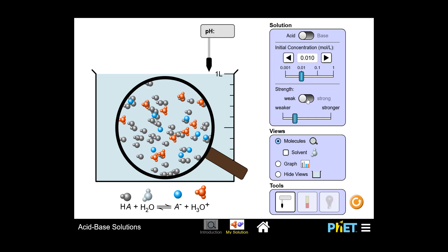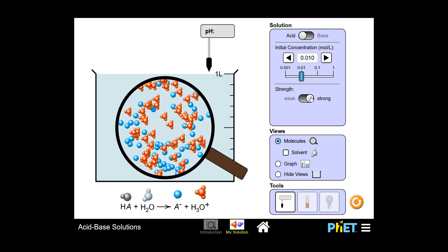On the right hand side, you could also flip between the weak acid and the strong acid solution. Again, notice the different particle types that you see in the solution.